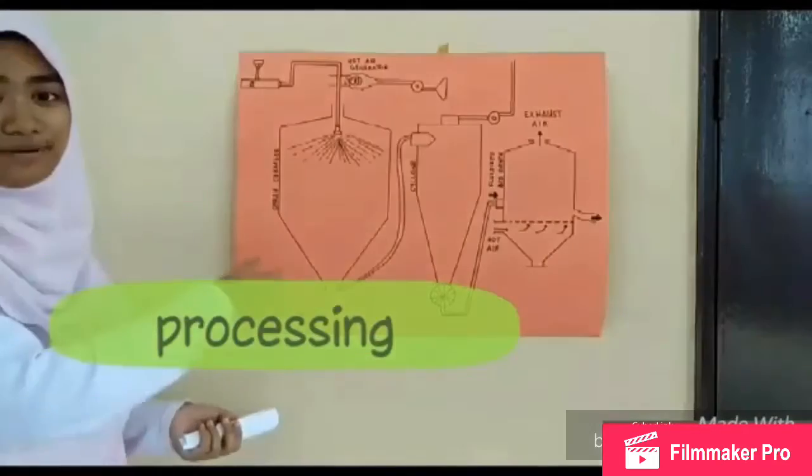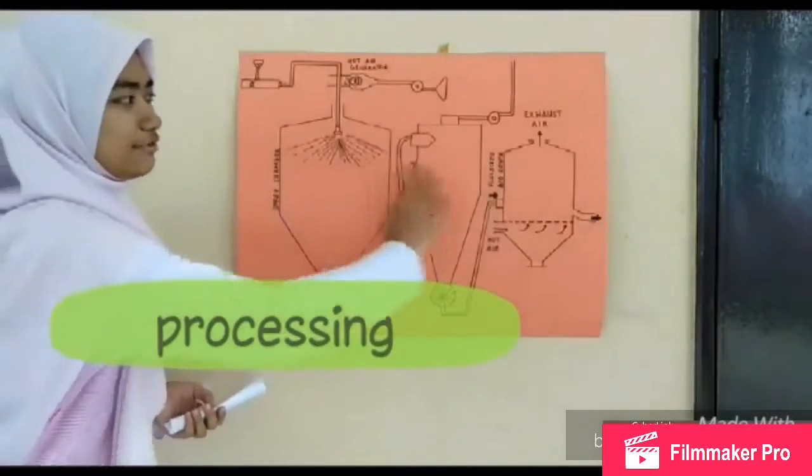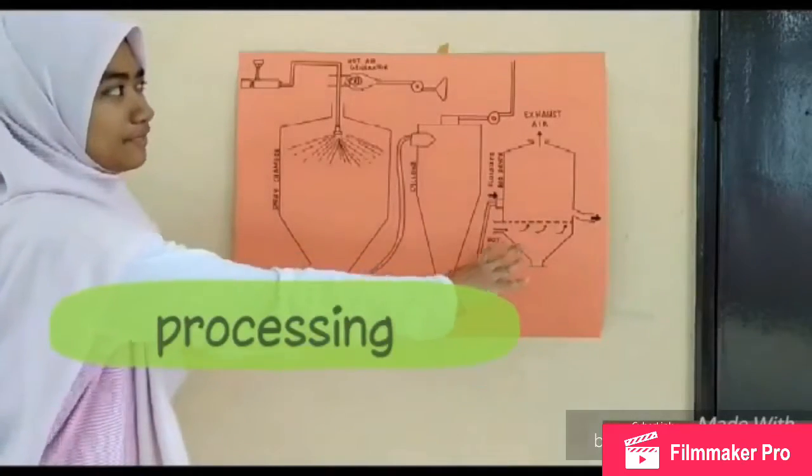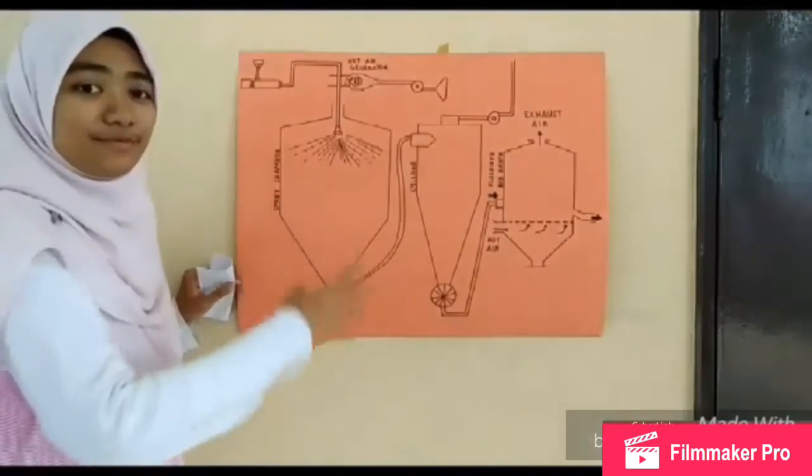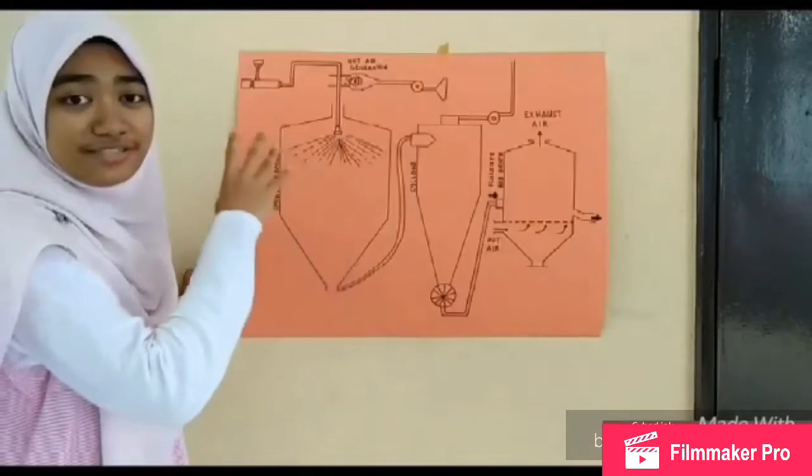Next, we'll proceed to the processing part. These three equipment are for the drying process, but we'll add another process which is the concentrating process.